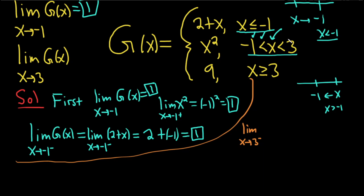So approaching from the left, we're smaller than 3. So we're looking at this condition here. So we have x squared. And then we plug in the 3, so we get 3 squared equals 9.